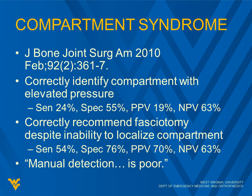They changed their endpoint to correctly recommending fasciotomy despite an inability to localize the compartment — sensitivity went up to 54%, a little more than doubled. But we're still missing half the cases, and that's still a big problem. Specificity was 76%, and positive predictive value jumped way up to 70%, while negative predictive value stayed the same.